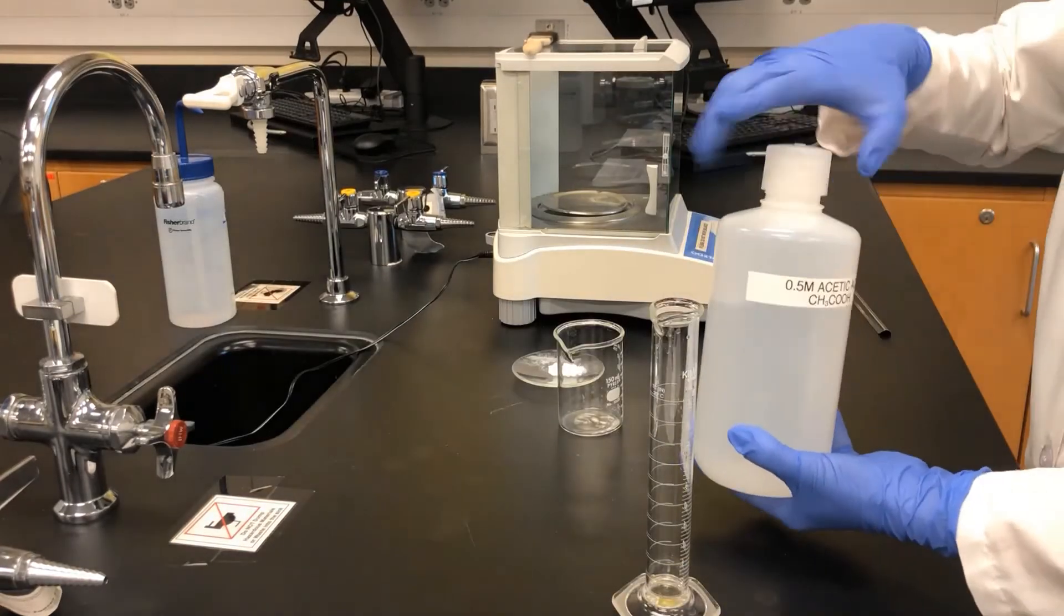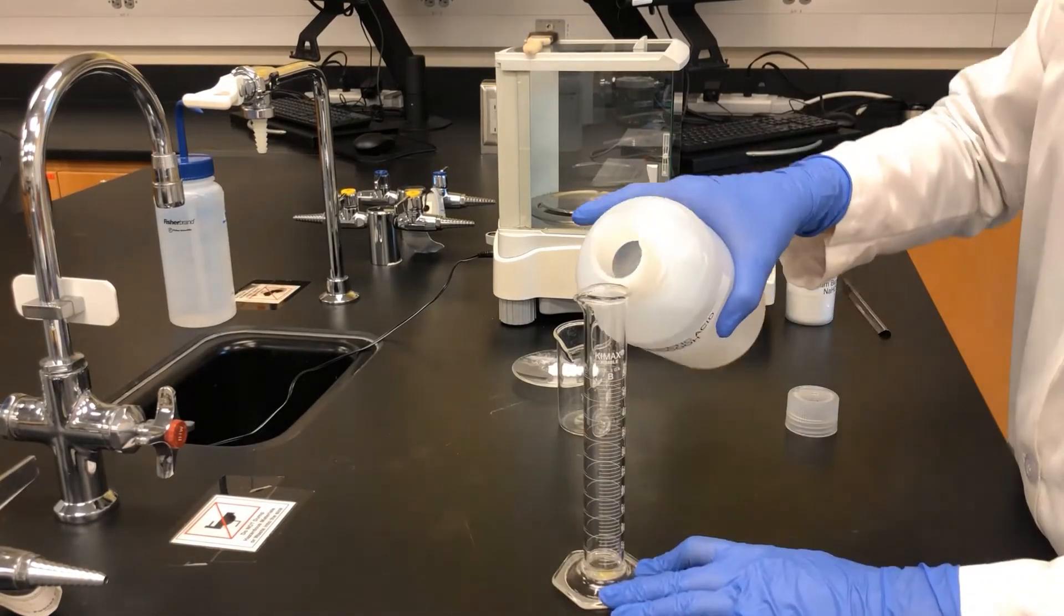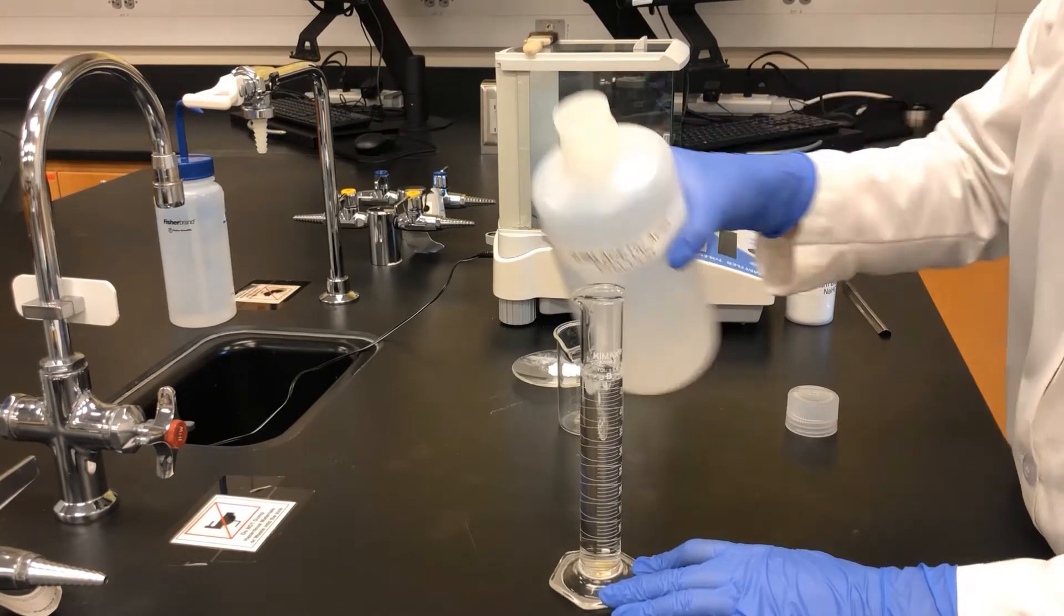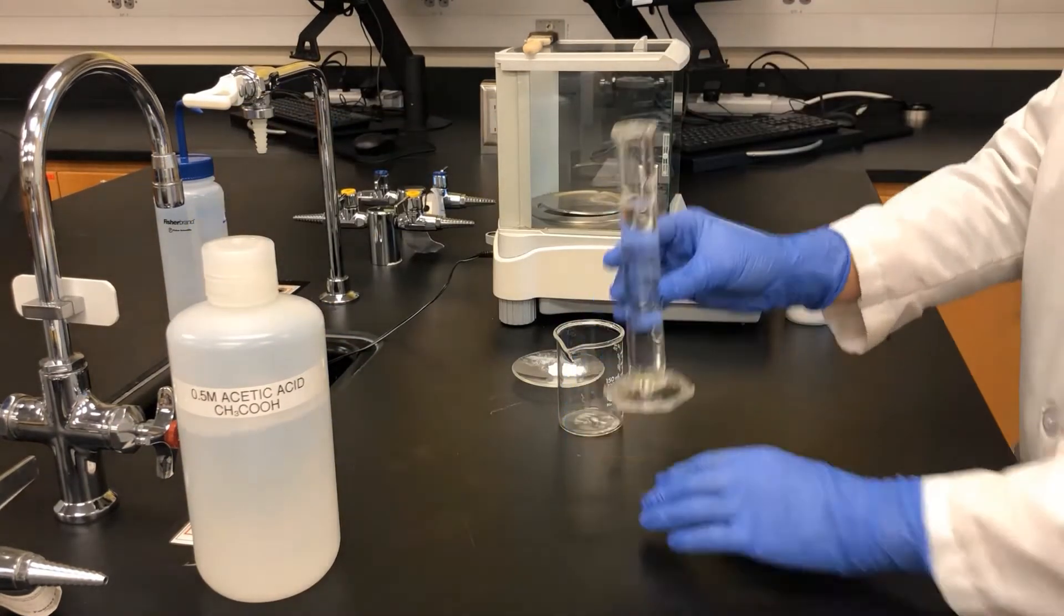Approximately 500 milliliters of 0.5 molar acetic acid is measured in a graduated cylinder. Then it is poured into a beaker.